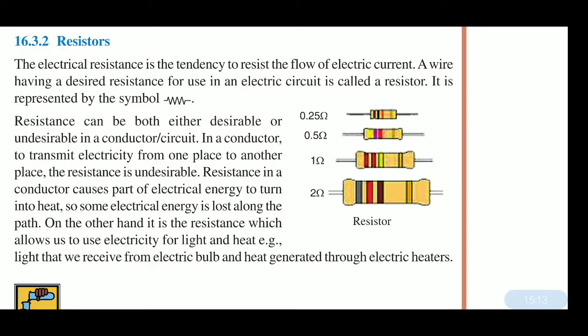All appliances have a certain type of resistance. On the other hand, it is resistance which allows us to use electricity for light and heat. The light we receive from electric bulbs and the heat generated from electric heaters — both are due to resistance.